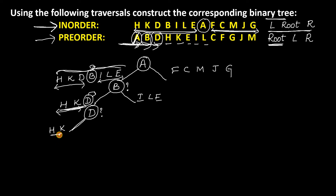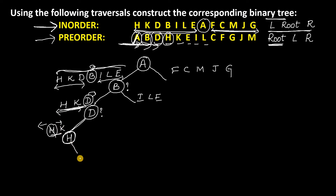Among H and K, check the preorder. H is coming first, so write H here. H is the root of this subtree. To the left of H there are no nodes, and to the right there is one node, K. So simply draw K as the right child of H. This part is now complete.